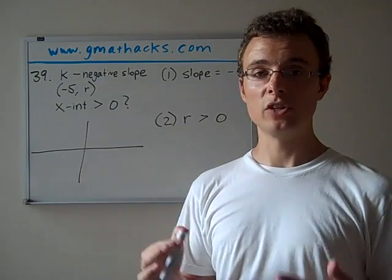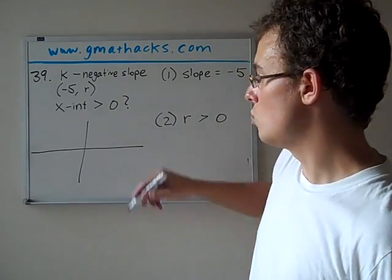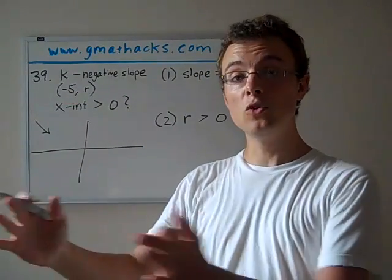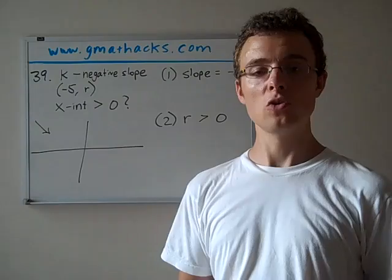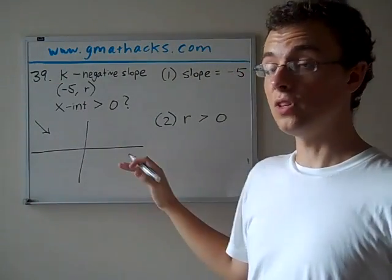It's very important to have just a good working understanding of how slopes work. So a negative slope is one that's going in this general direction. As it moves to the right, it's going down. That's the definition of a negative slope. It's going down as it moves to the right. So we know that K is a line that moves in that general direction.